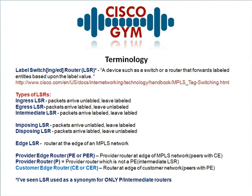I've seen it listed as 'label switch router,' 'label switching router,' and 'label switched router.' Basically it's a device — such as a switch or a router — that forwards labeled entities, meaning packets, based upon the label value. That definition is pulled from Cisco's Internetworking Technology Handbook, which is a really good read for review or to get a quick look at something you're starting to learn. There are also multiple definitions for LSR floating around, which is why there's an asterisk — I'll get to that in a second.